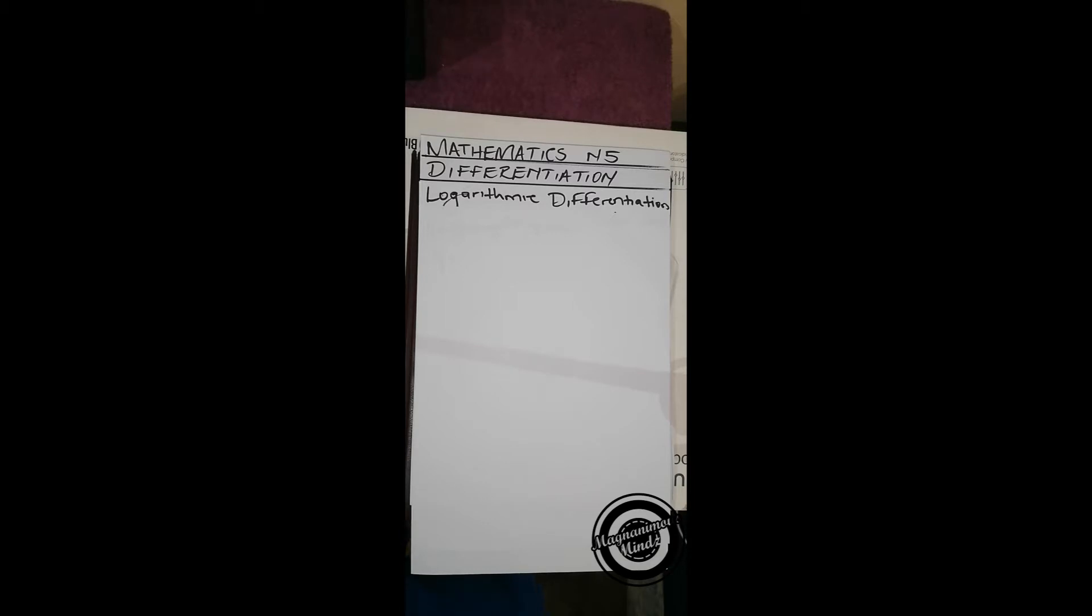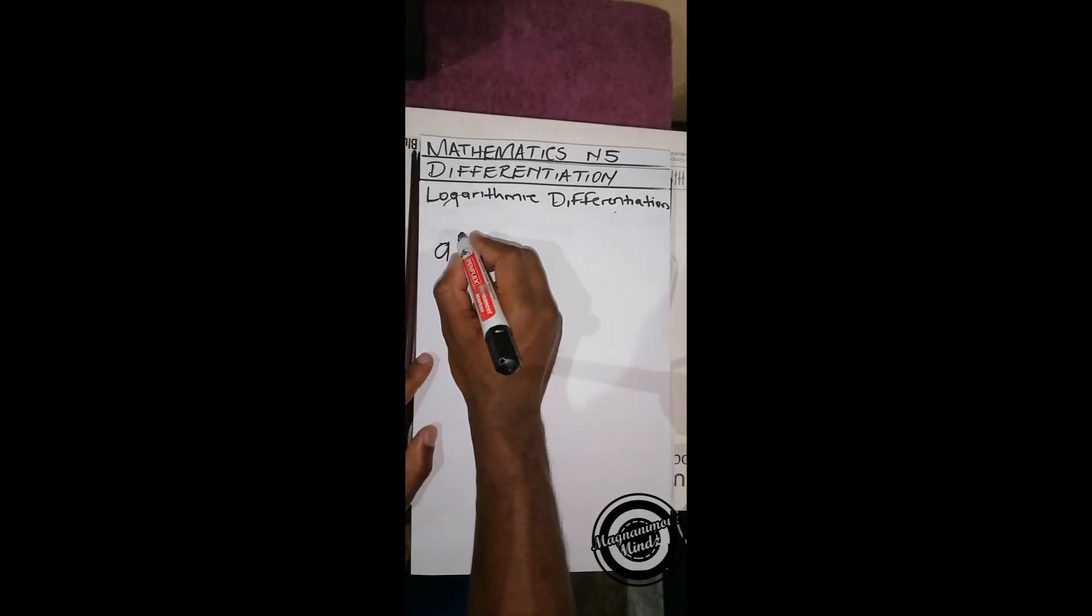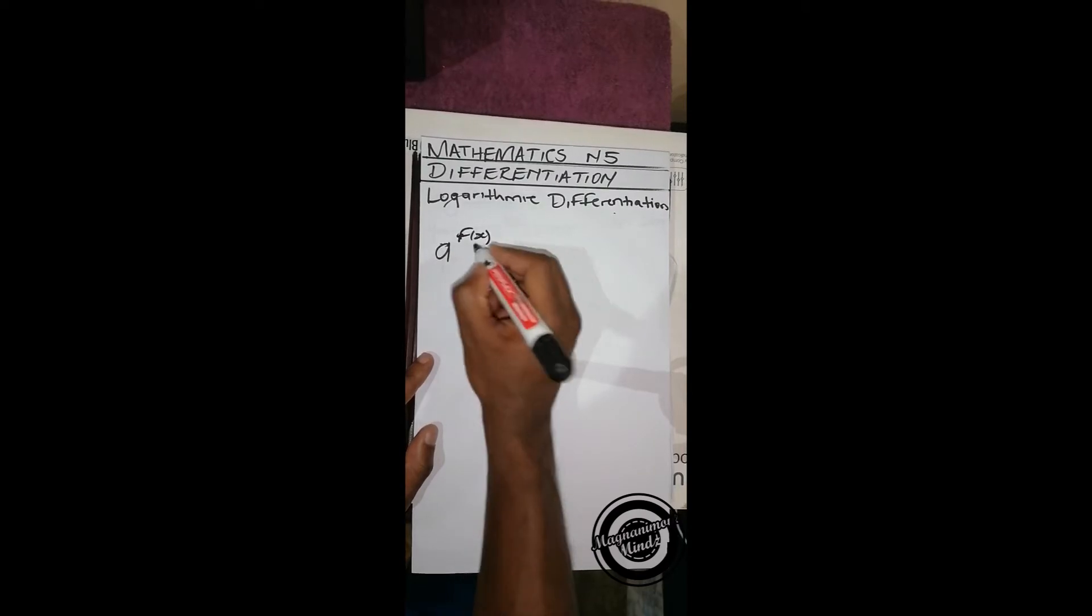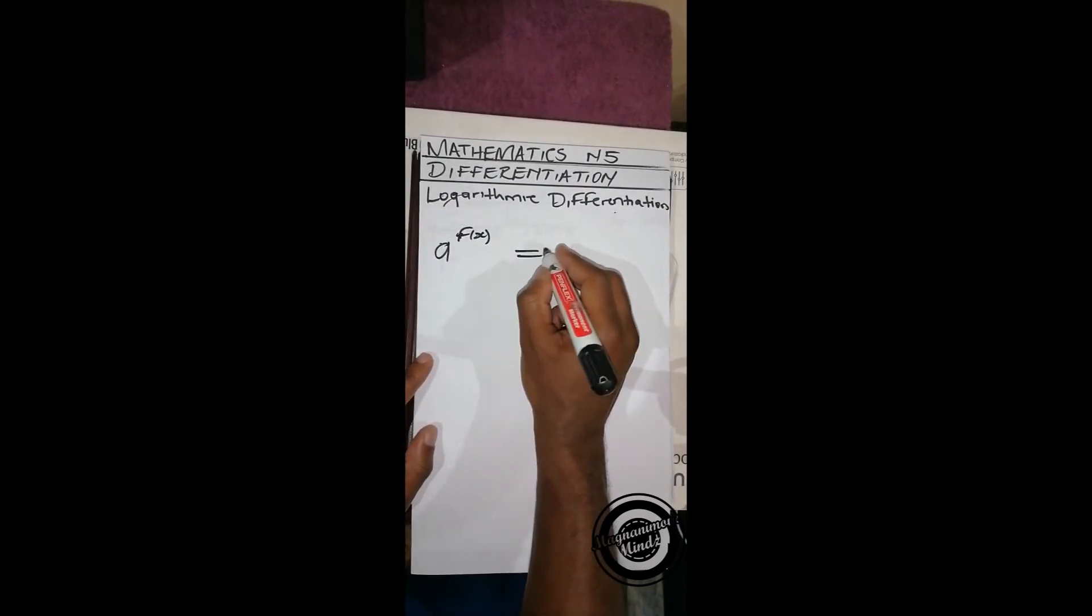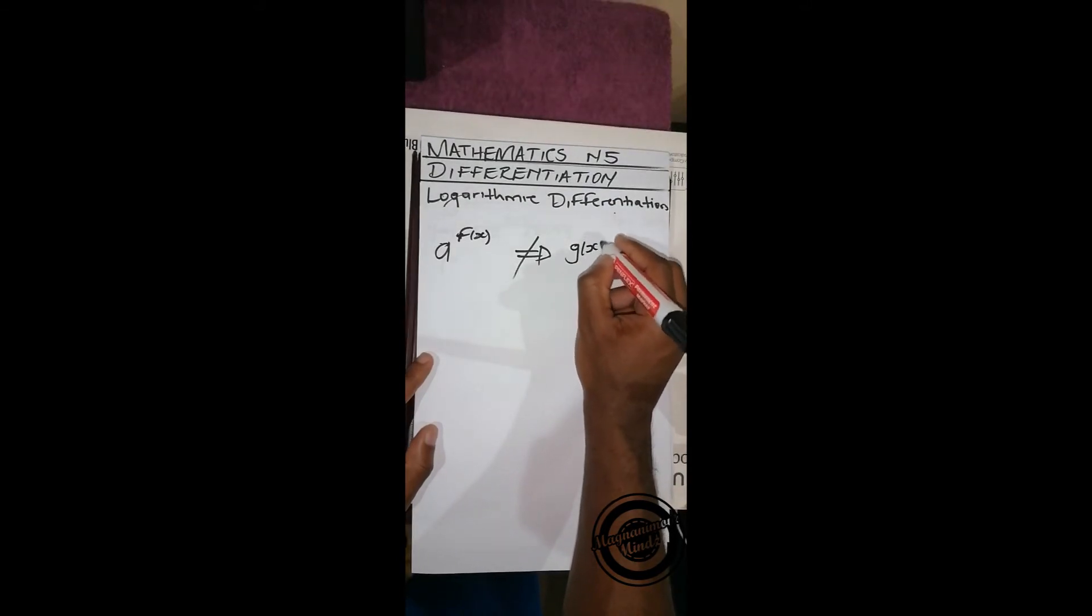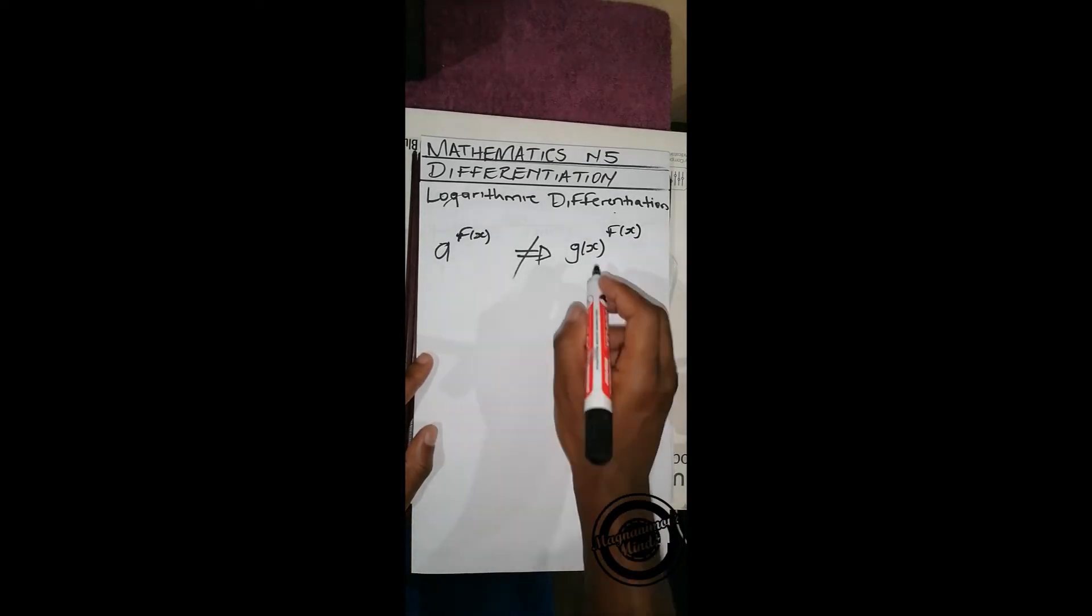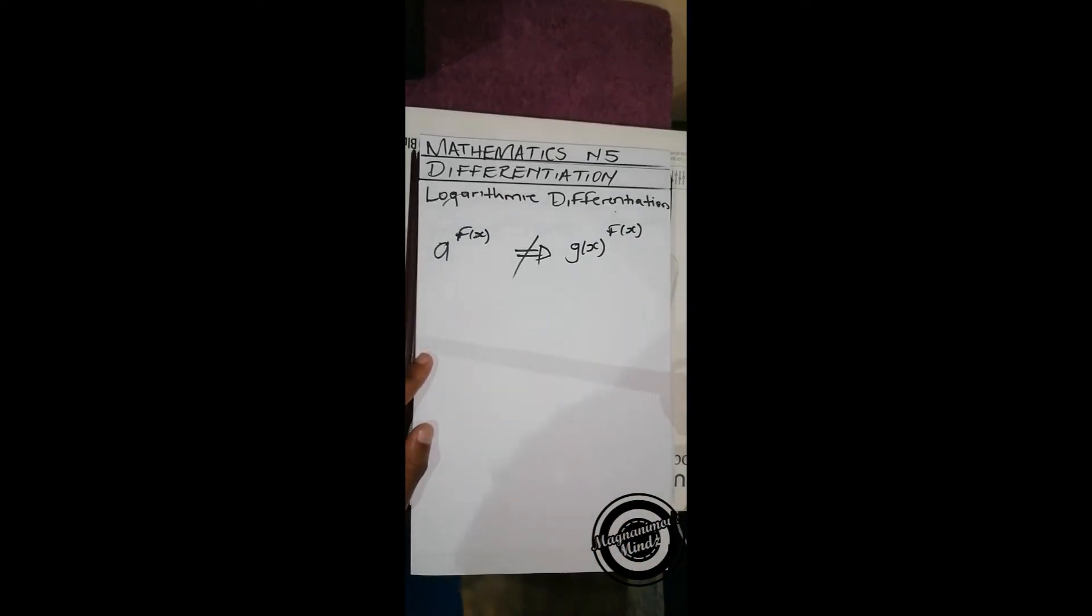We can use the same approach we used for a number to the power function. So what we used for a to the power f(x), we cannot use for g(x) to the power f(x). So for g(x) to the power of x,